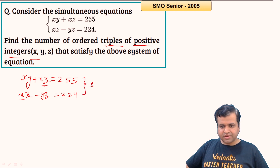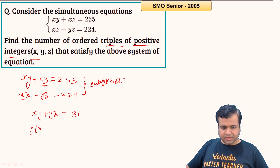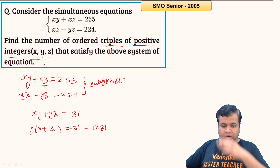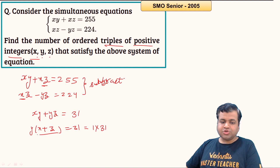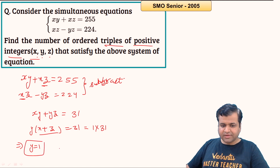Let's subtract the two equations. xz cancels out, so xy + yz = 31. Taking y common: y(x + z) = 31. Now, 31 is a prime number and can be written as a product of two natural numbers in only one way: 1 × 31. Since x, y, and z are all natural numbers, x + z must be at least 2. So y must equal 1, and x + z = 31.